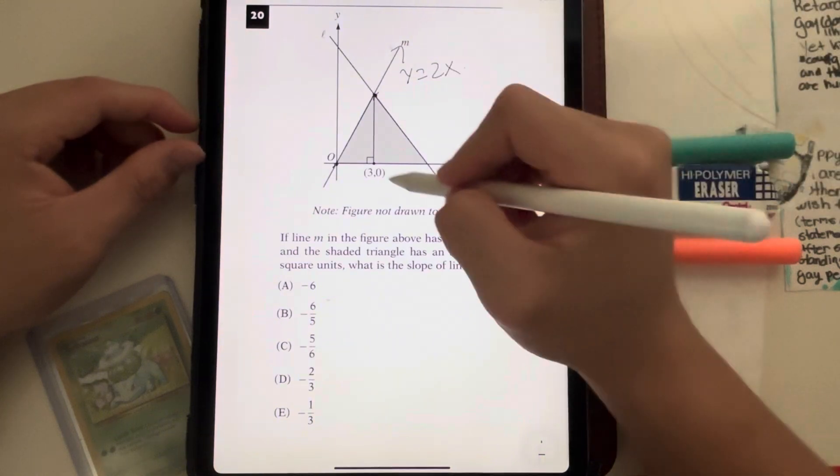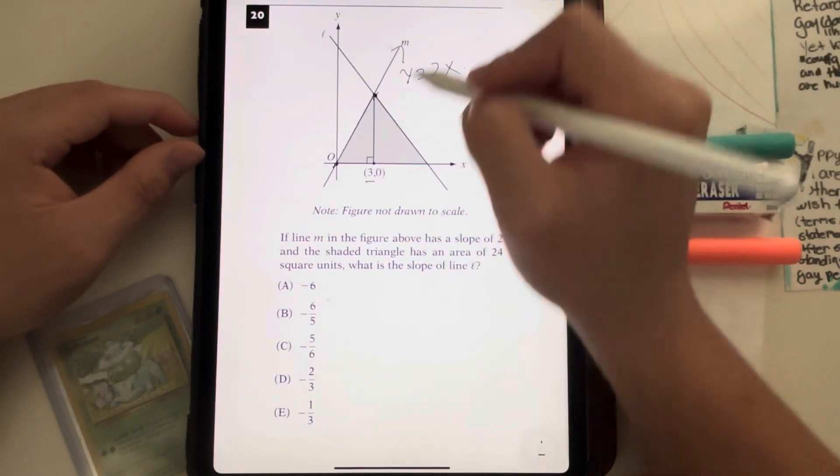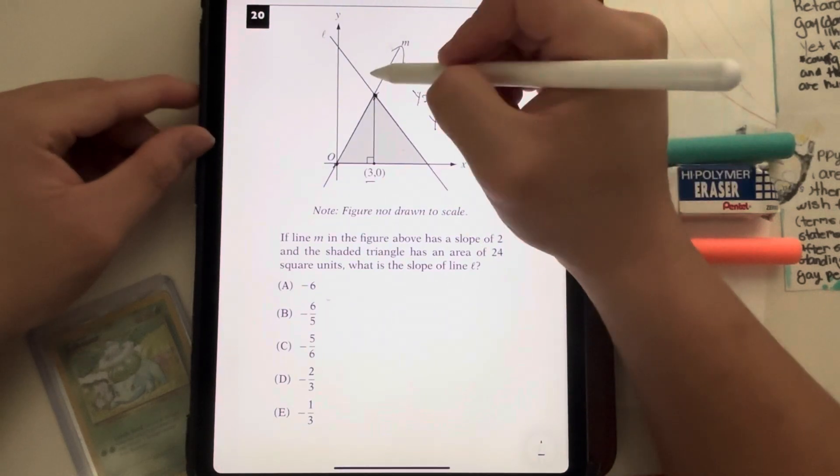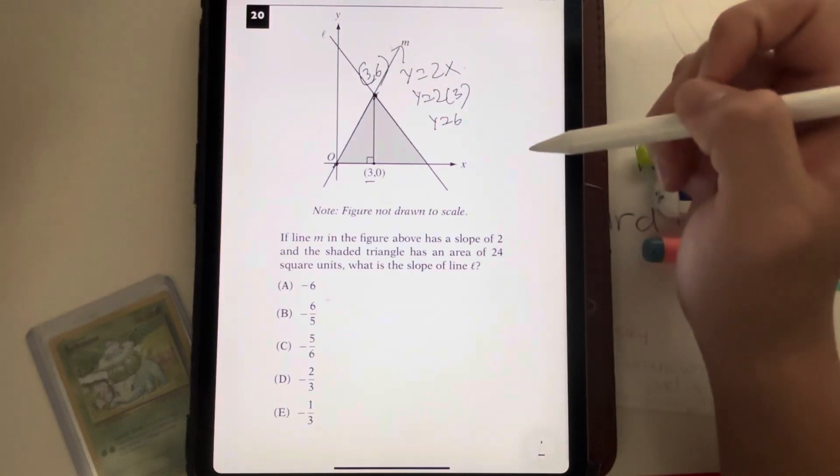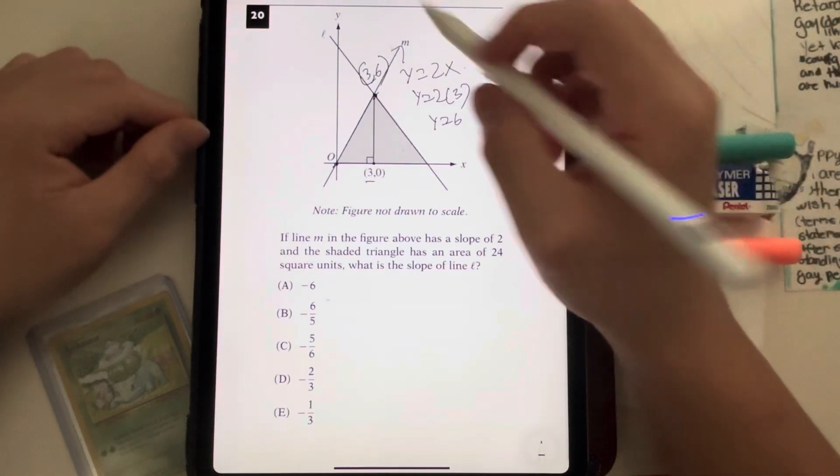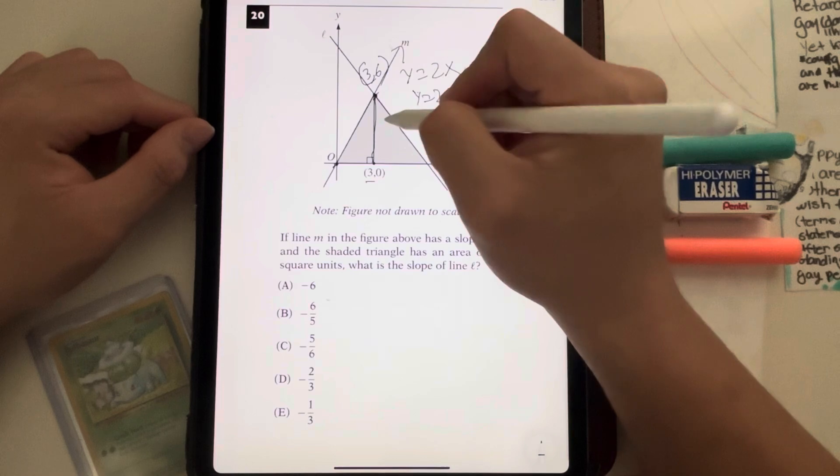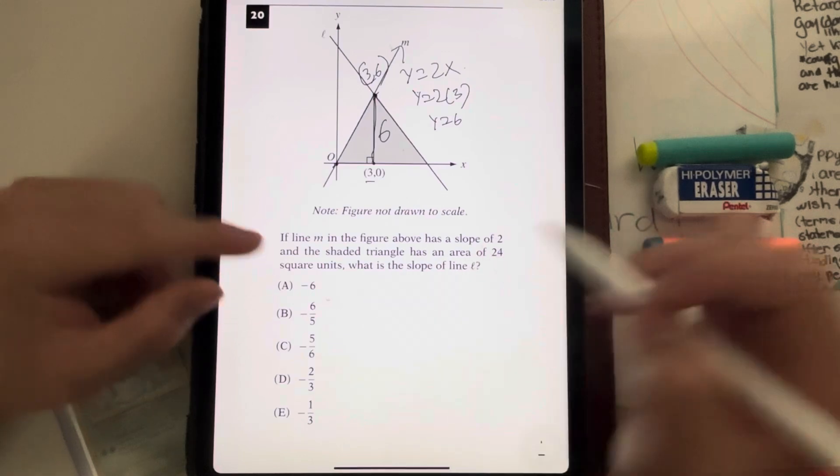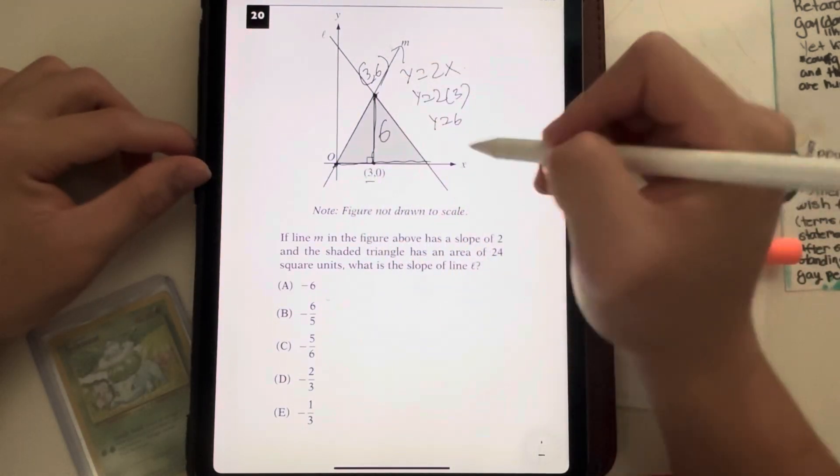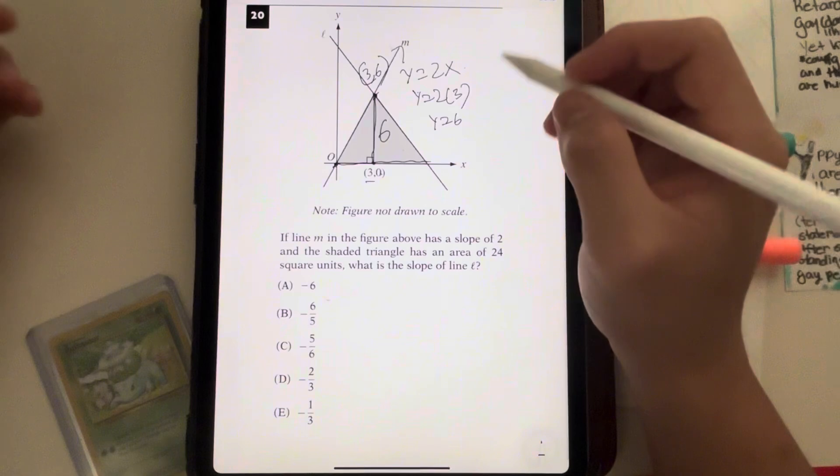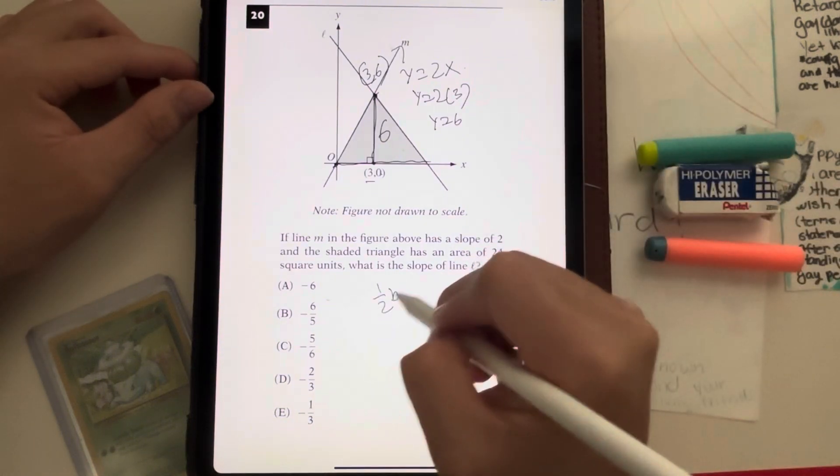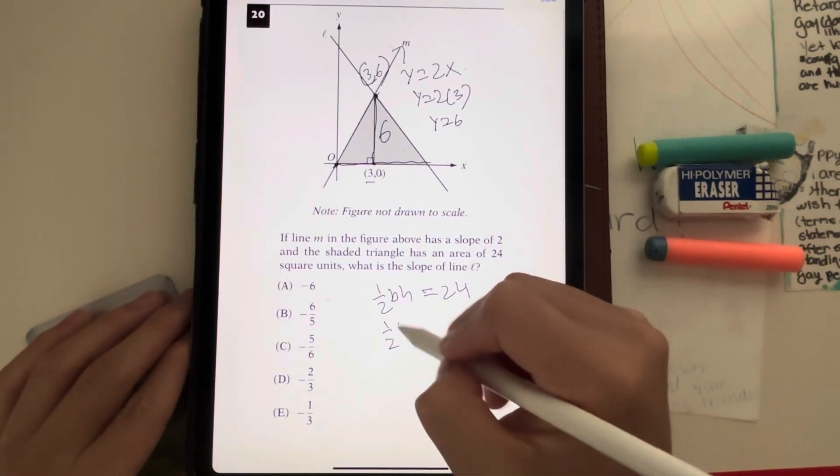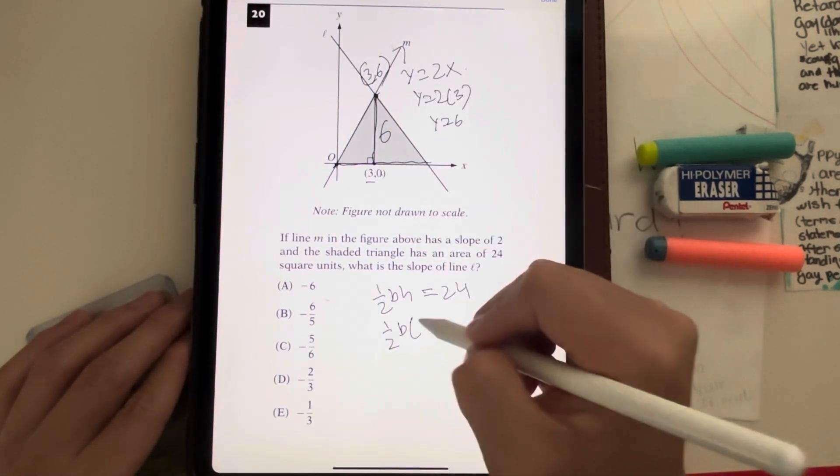Then it could tell me this point right here, because this has an x-coordinate of 3. Plug in 3, I get y is equal to 2 times 3, giving me y is equal to 6. So this point right here is actually 3, 6. Then from here, I figure out that this height from 0 to 6 gives me a height of 6. Now, how do I use that information? Because it tells me that the area is 24 square units. So I have to figure out the base of this triangle. What's the formula for the area of a triangle? It's 1 half base times height, and that's equal to 24. I know that 1 half times my base times my height, which is 6, is equal to 24.